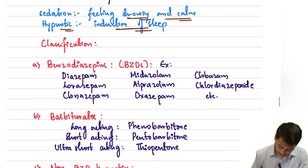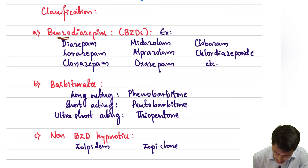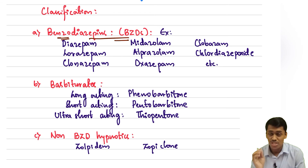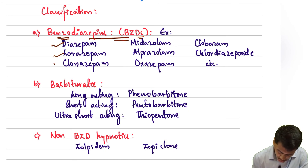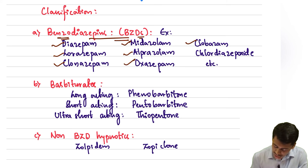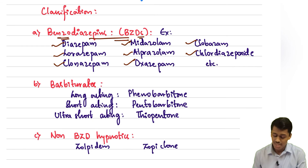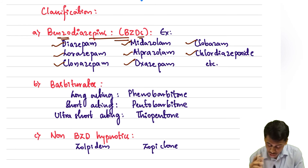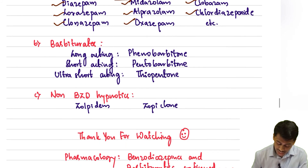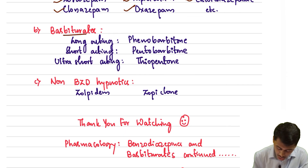Now let's look at the classifications of sedatives and hypnotics. The first class is called benzodiazepines, denoted by BZDs. Examples of benzodiazepines include: diazepam, lorazepam, clonazepam, midazolam, alprazolam, oxazepam, clobazam, and chlordiazepoxide, etc.